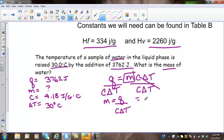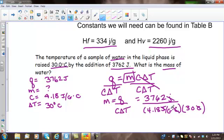Everything over here cancels. So, then I have m equals q divided by c delta T. So, my q is 3762 joules divided by my c, which is 4.18 joules per gram degrees Celsius. And, my delta T, which I already said, was 30. So, notice how my Celsius cancels, and my joules cancel, and I'm left with grams, which should make sense, because I'm solving for mass. So, m is going to be equal to 3762 divided by 4.18 times 30. And, that's going to give me 30 grams. So, my answer is 30 grams.